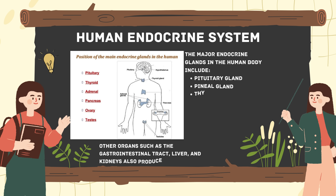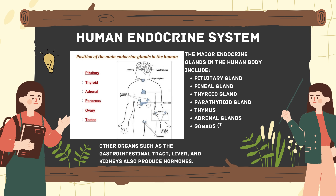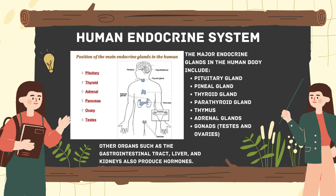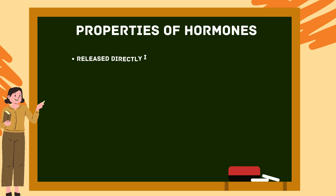Next is the human endocrine system. The major endocrine glands in the human body include the pituitary gland, pineal gland, thyroid gland, parathyroid gland, thymus, adrenal glands, and gonads — testes and ovaries. Other organs such as the gastrointestinal tract, liver, and kidneys also produce hormones.